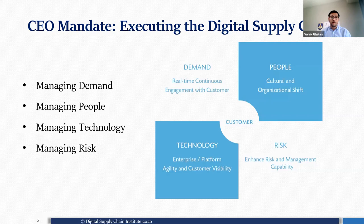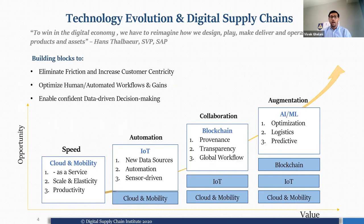For those joining for the first time, during the first session we talked about the digital supply chain. Working with global supply chain leaders, we came up with four categories: demand, people, technology, and risk. Over the last two weeks we talked about demand and people — different examples on how to stimulate demand, how to do cultural shifts, and how to gain the skills needed for digital supply chain transformation. Today we'll talk about managing technology.